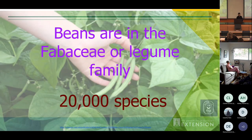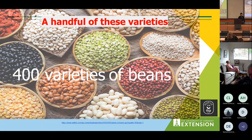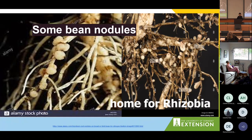Beans are in the Fabaceae, or legume, family, which consists of about 20,000 species and 400 varieties. As we learned, the nitrogen-fixing root nodules aren't a part of the bean root itself — instead, they are home to bacteria that work symbiotically to exchange carbohydrates, and the nodules help the plant utilize nitrogen effectively.